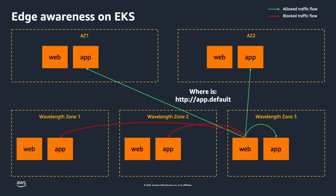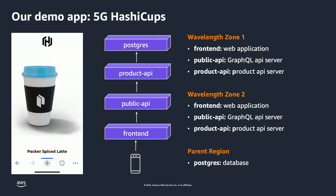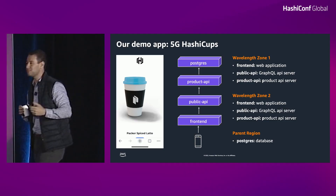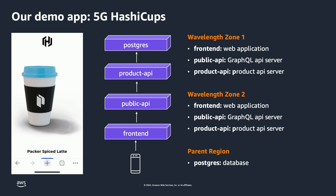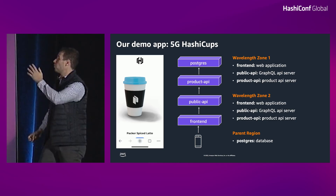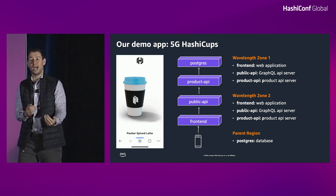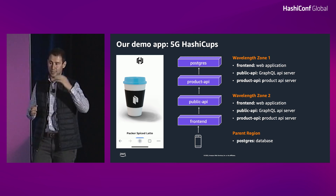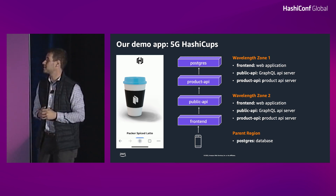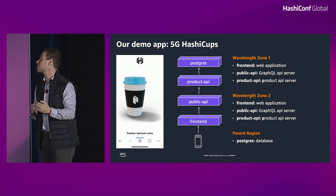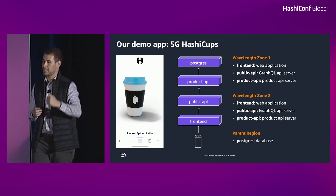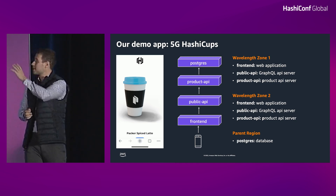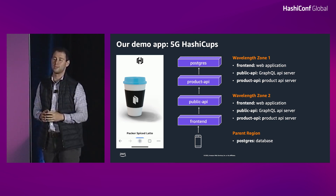Rather than a simple two-tier web app, we wanted to bring this to life with HashiCups on AWS Wavelength — 5G-ifying the application. We chose four key microservices illustrative of the primary routing decisions in an edge computing environment: a front-end service, a public API service acting as a proxy, a product API service, and a Postgres database. The connection flow goes: mobile device to front-end, to public API, to product API, to Postgres — and that flow is important in terms of how we configure routing.